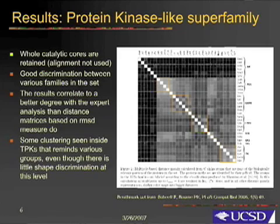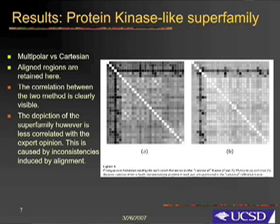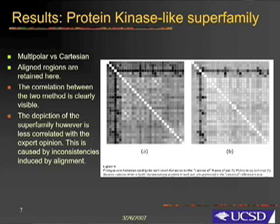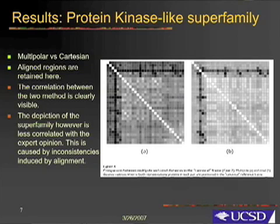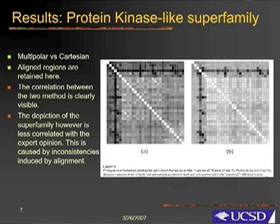Some clustering seen inside the cases reminds us of various groups, even though there is little shape discrimination at this level. To test the ability of the multipolar parametrization to scale to higher levels of detail, we show a comparison between the distance matrix in the multipolar representation and the distance matrix in the Cartesian representation, where we only compare the aligned portions of the proteins. The correlation between the two methods is clearly visible in these matrices.